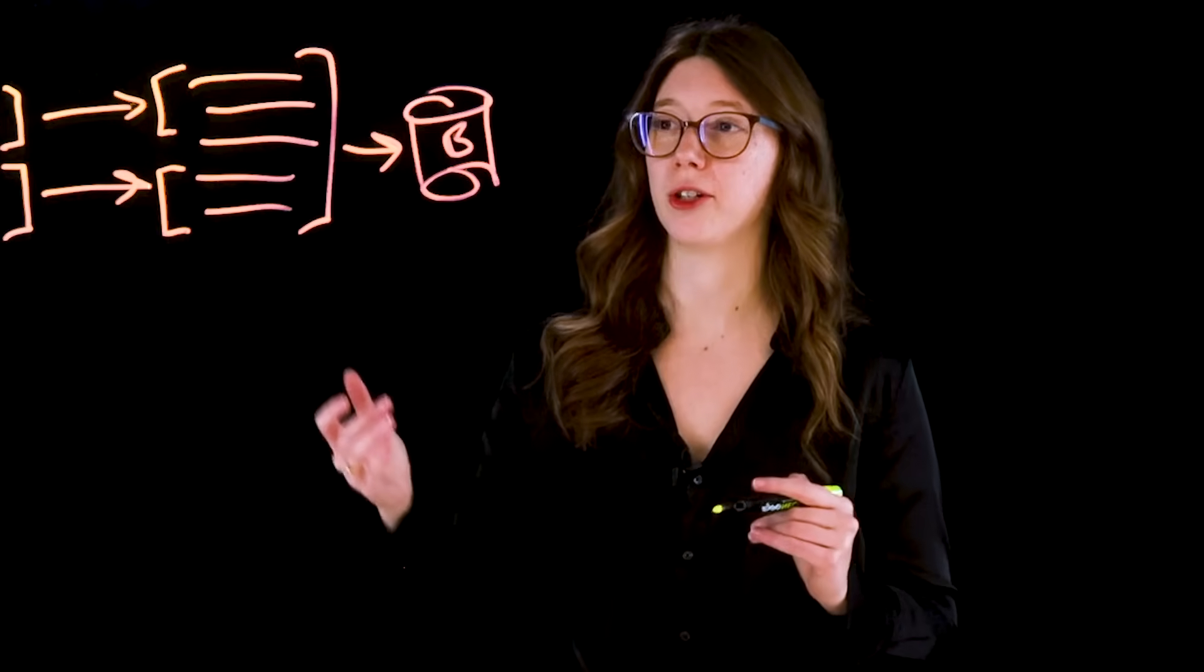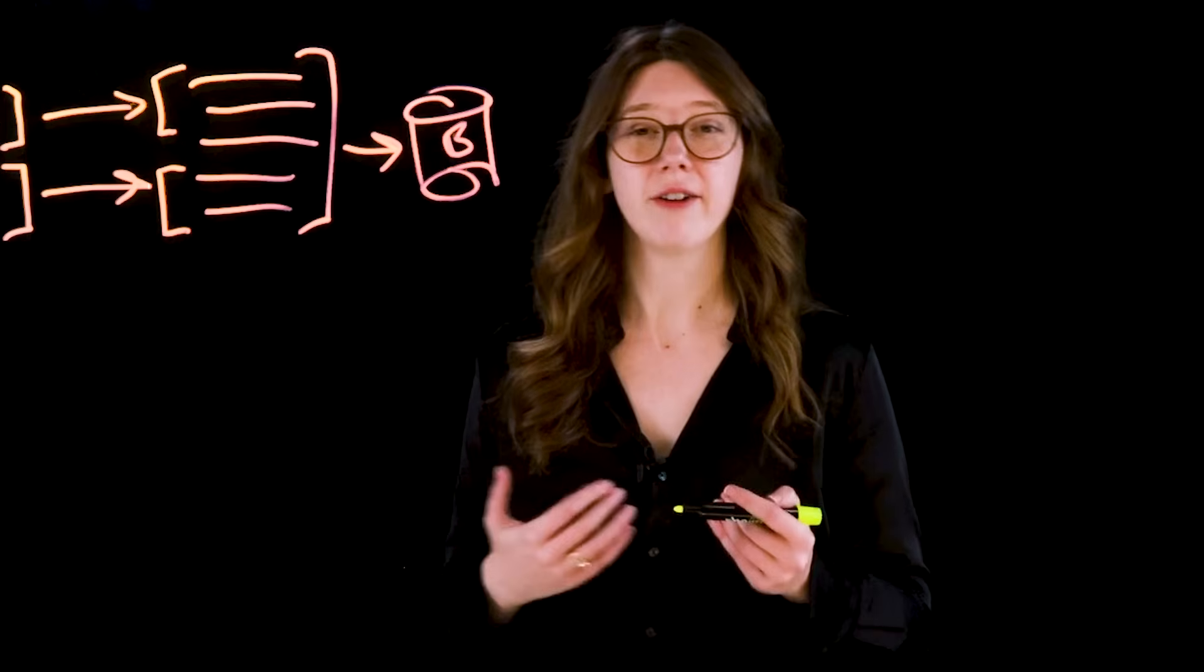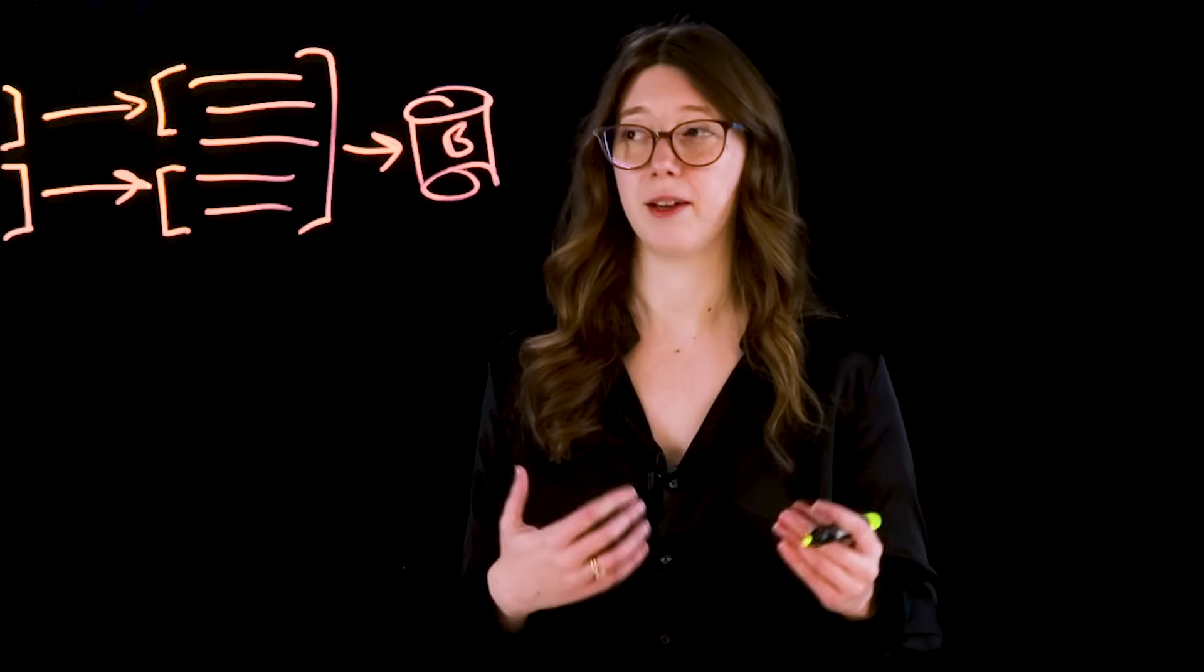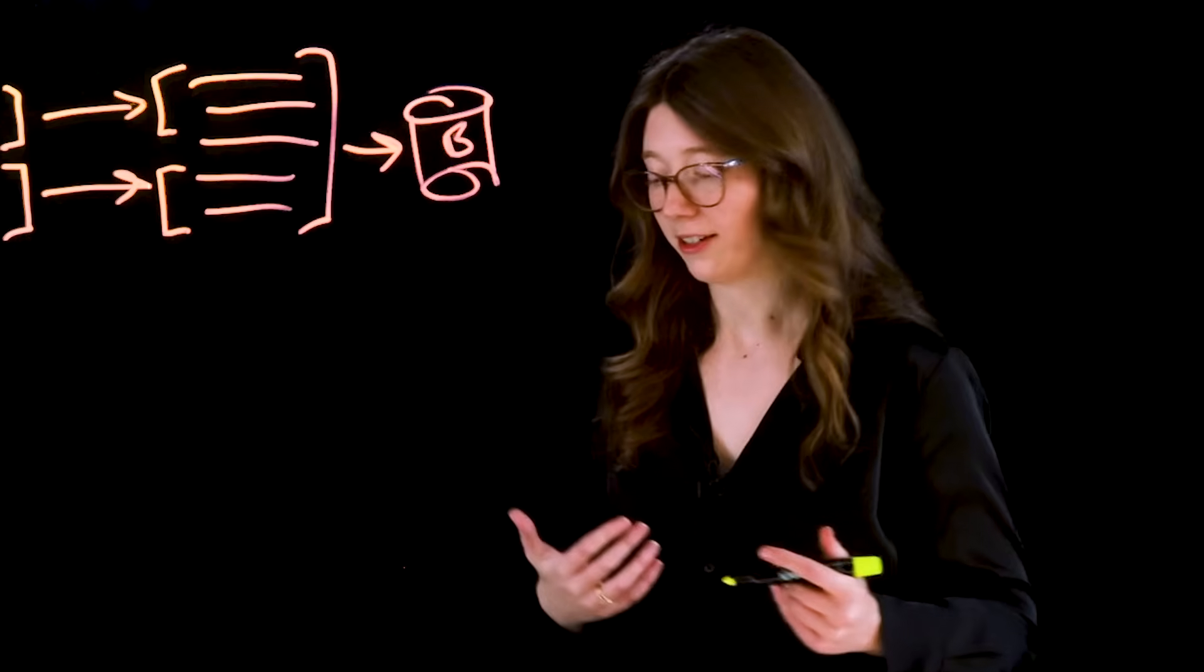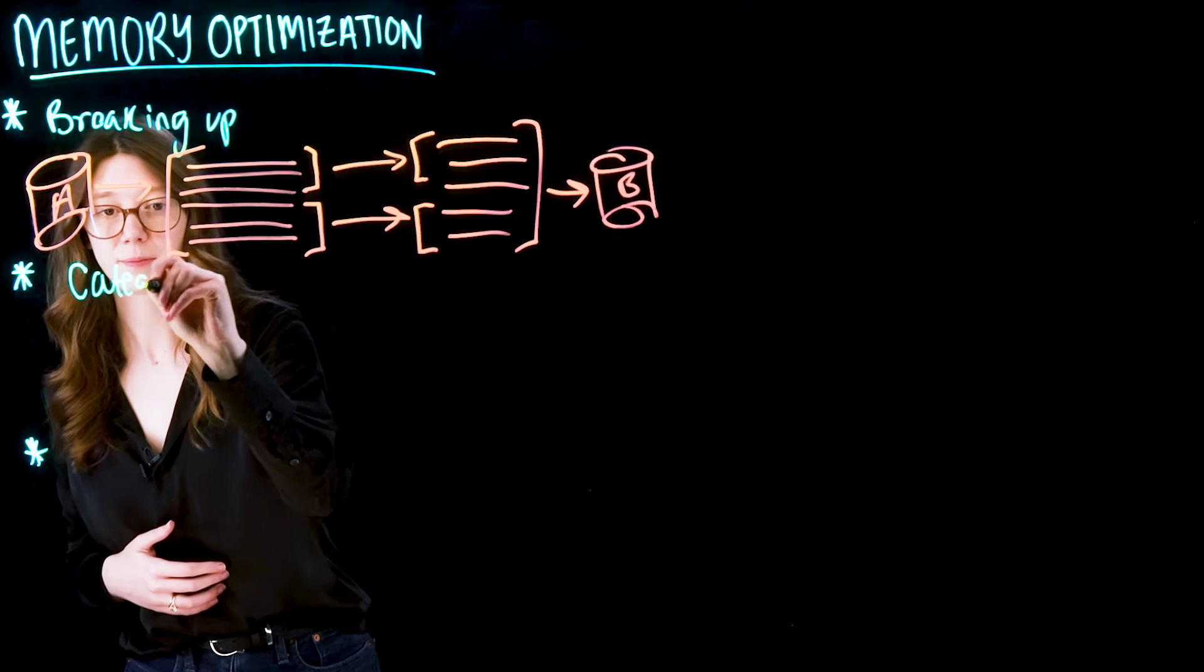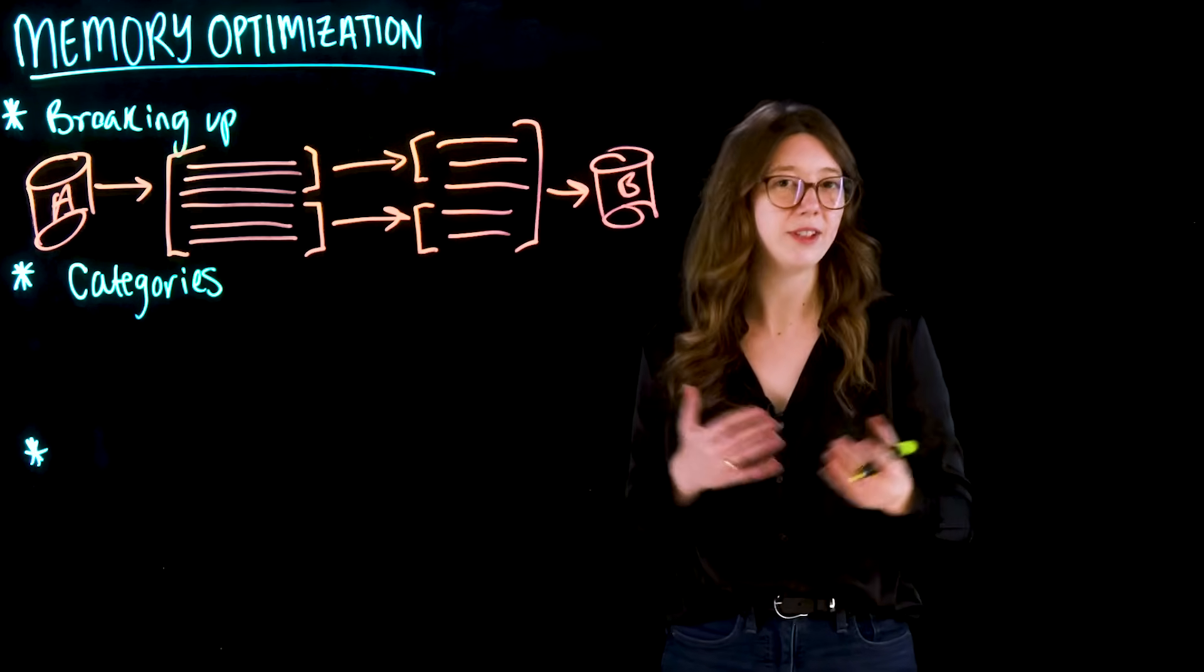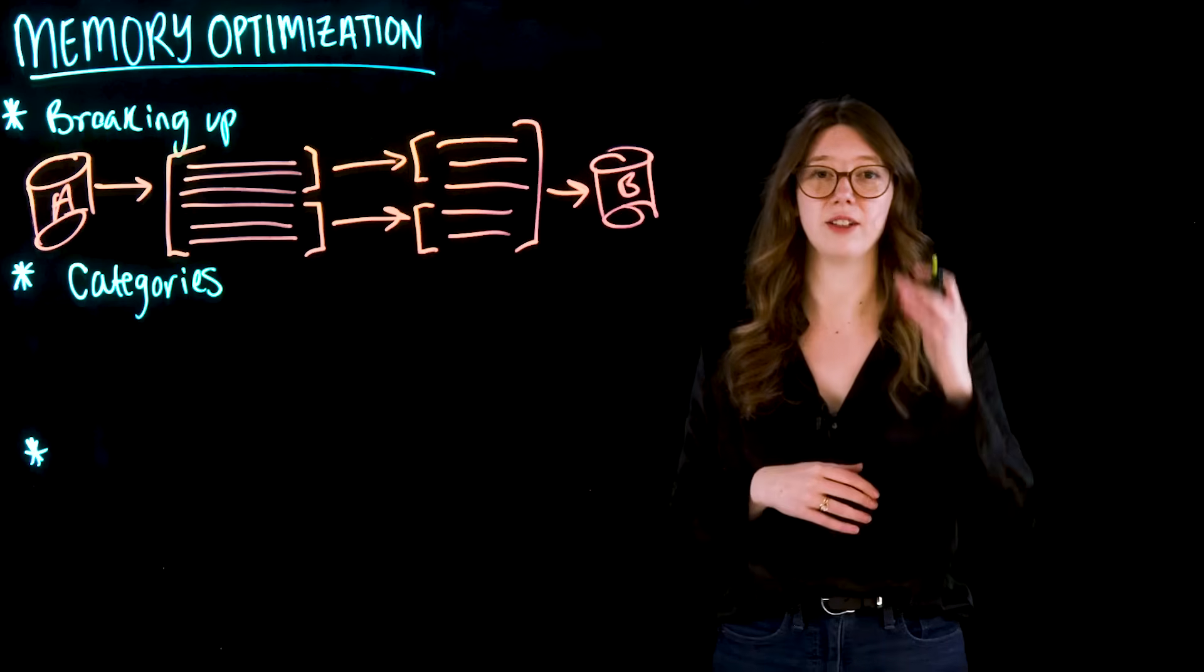Now, let's think about the data that we're actually moving through this pipeline, because the data itself also takes up memory. So an area of opportunity that we can easily optimize is if you're working with a lot of string data, we can actually transform them into different types of data types that can be processed much faster in a more optimized way by Python and pandas. And this is essentially done by building out categories.